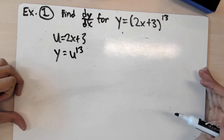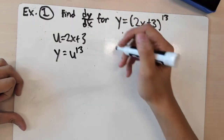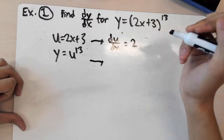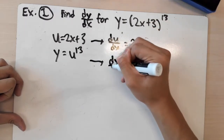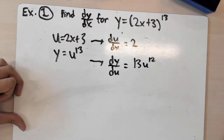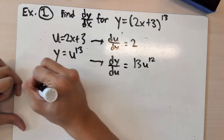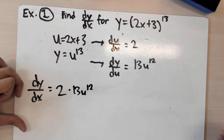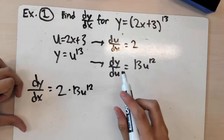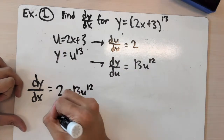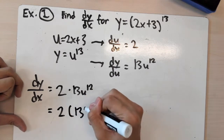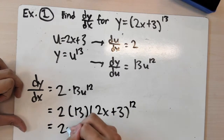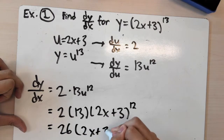We find the derivatives of both the inner and outer functions. So du/dx equals 2, and dy/du equals 13u to the twelfth. By chain rule, we multiply these two derivatives: 2 times 13u to the twelfth. Substituting u equals 2x plus 3 gives us 2 times 13 times (2x plus 3) to the twelfth, which simplifies to 26 times (2x plus 3) to the twelfth.